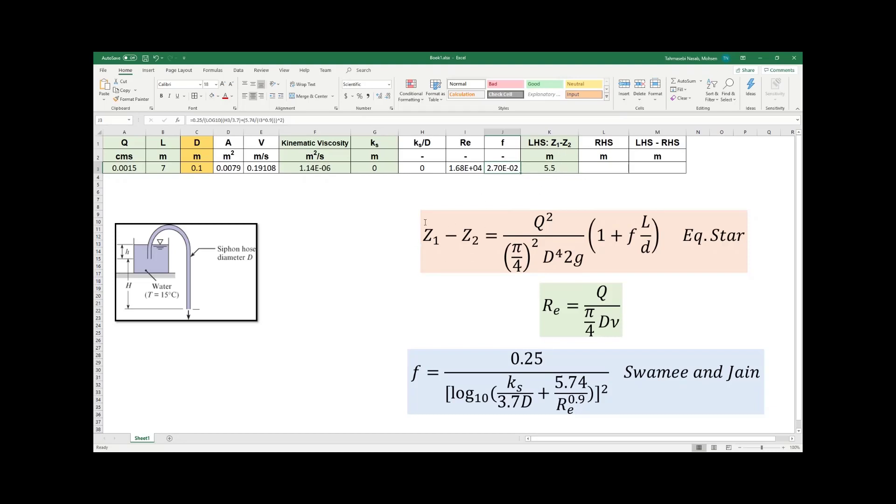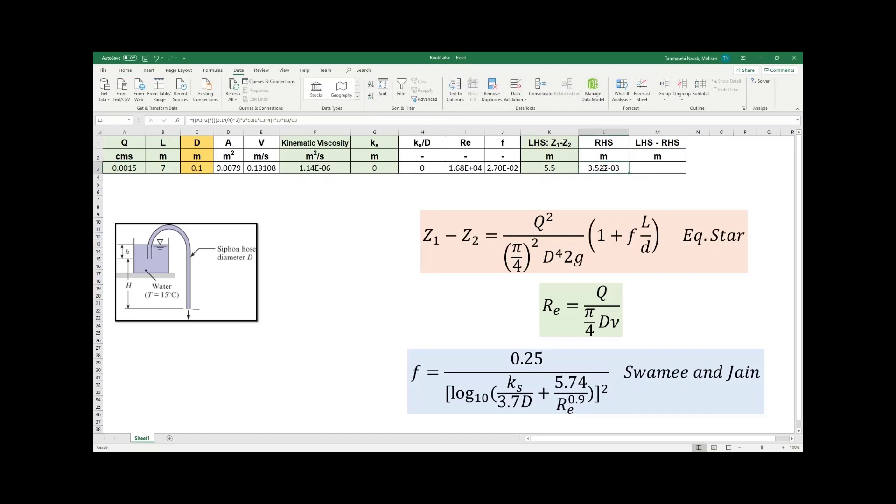Now I have the left-hand side of the equation. I need to calculate the right-hand side. If my guess for D is correct, then left-hand side and right-hand side should be equal. In other words, LHS minus RHS should be 0. Let's calculate right-hand side. I have all the values. I put the right-hand side equation here and calculated it as 3.5 times 10 to the power negative 3.